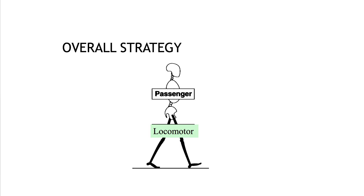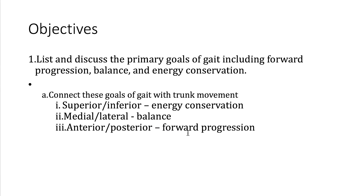Here we want to discuss the overall goals of gait and how it applies to clinical practice. When we look at gait, the trunk essentially becomes the passenger and the legs do all the locomotor work — this is how we get that Bugs Bunny look when we're walking. We can break down the trunk movements into superior, inferior, medial, lateral, and anterior-posterior directions, because they essentially aren't zero. So even though we treat the trunk as a passenger, there's still some cost in terms of moving it, and we can relate those movements to different overall therapeutic goals.